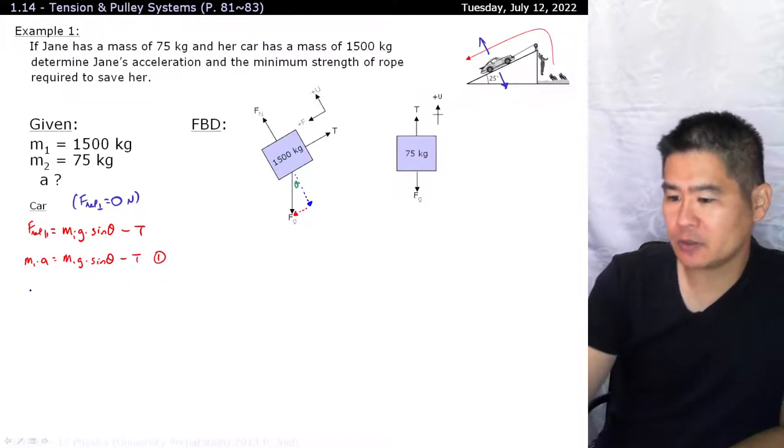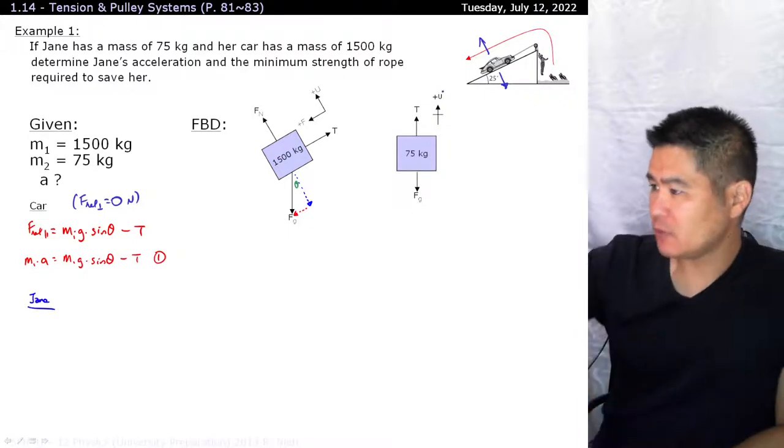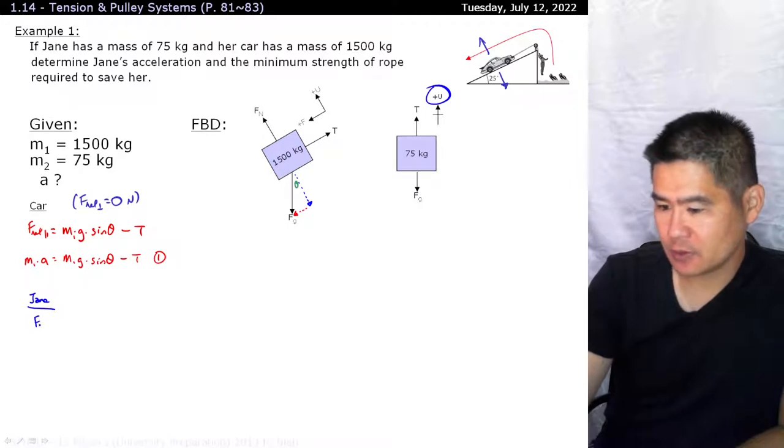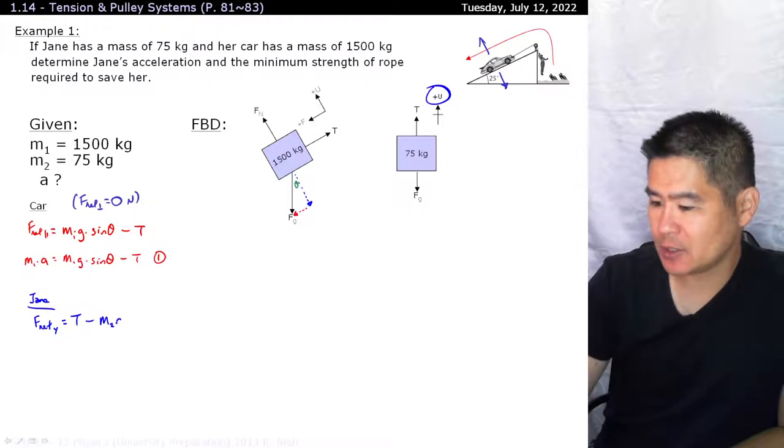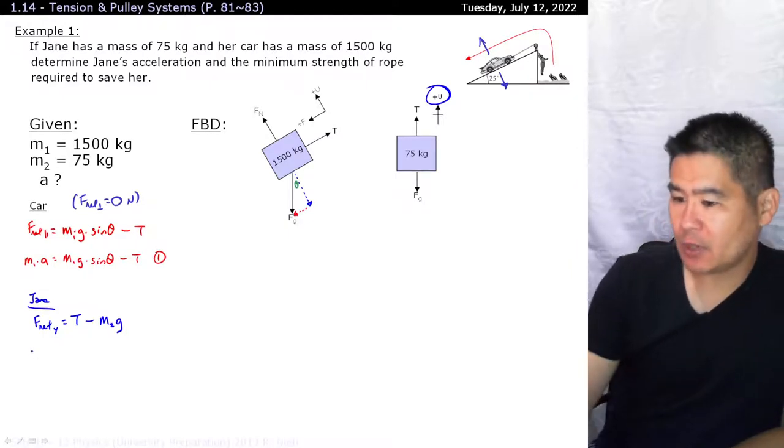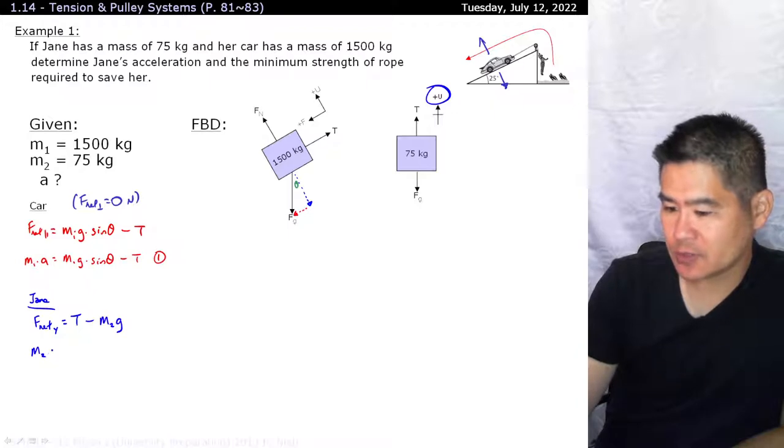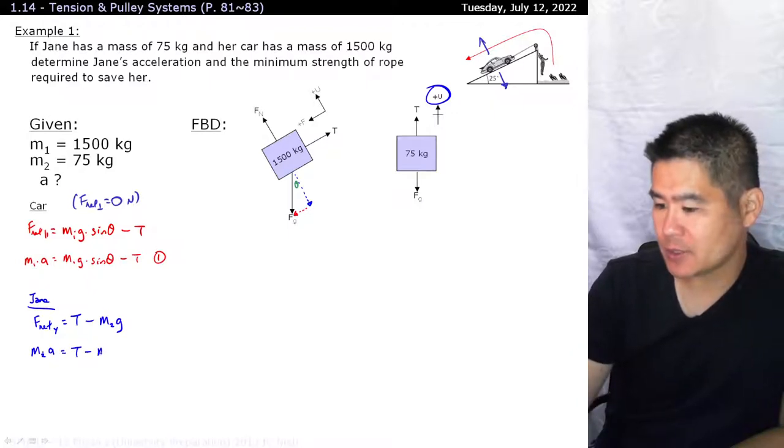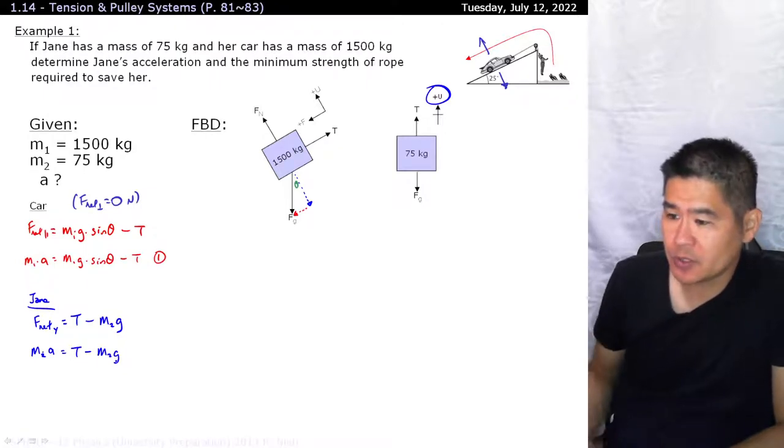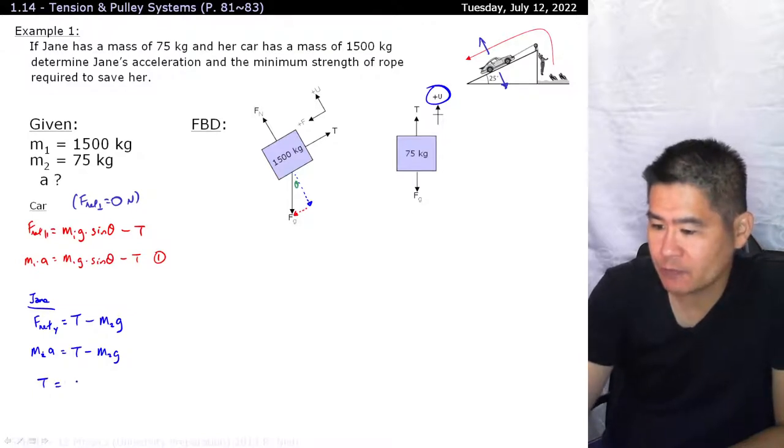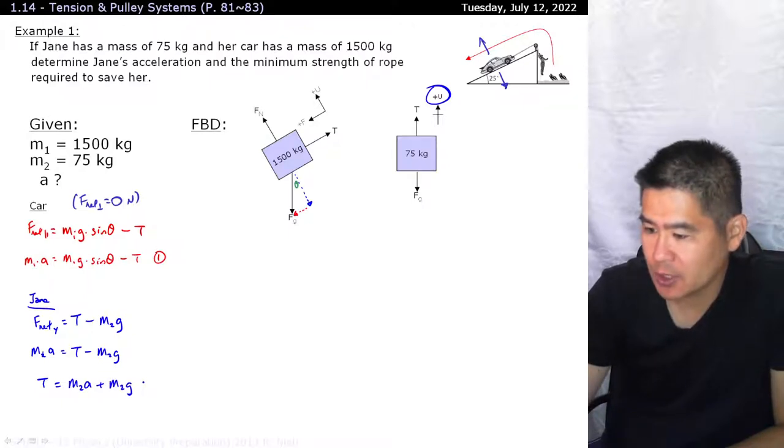Now let's move on to the world of Jane. As for Jane, we're taking it that upwards is positive. So our F net in the y dimension is equal to tension minus mass of Jane times gravity. F net y is equal to M2 times our acceleration. And that's equal to tension minus M2 G. I'm just going to isolate this for tension, so tension is equal to M2A plus M2G.